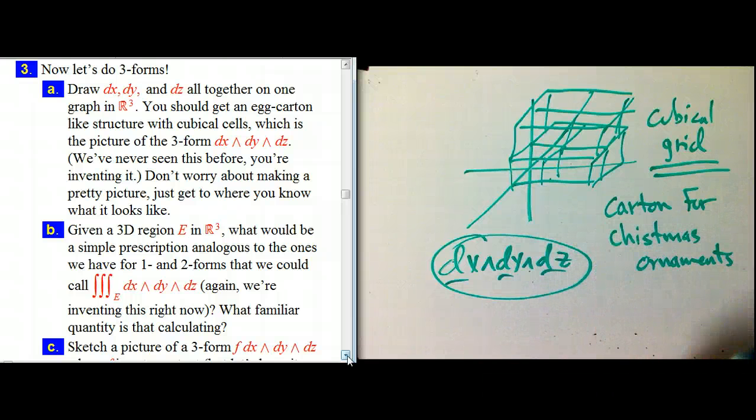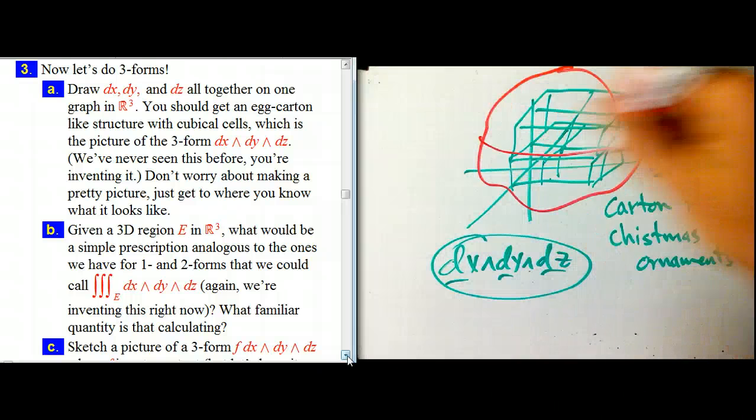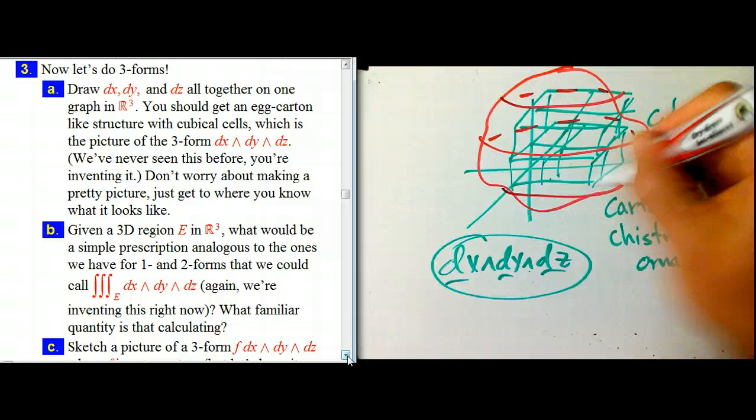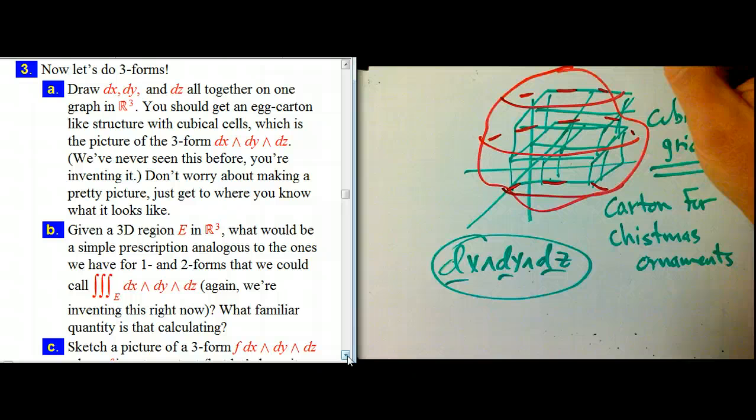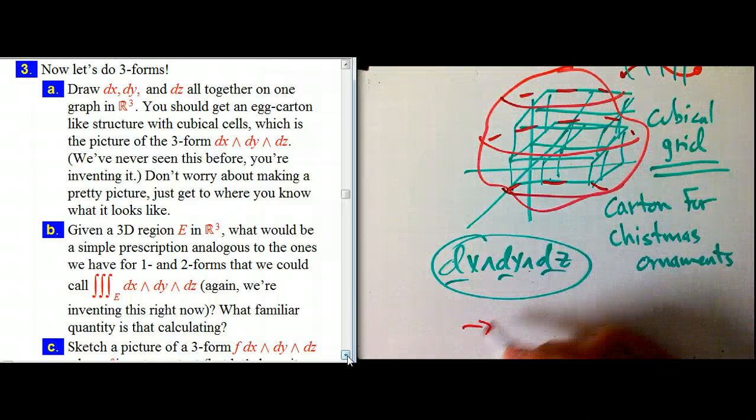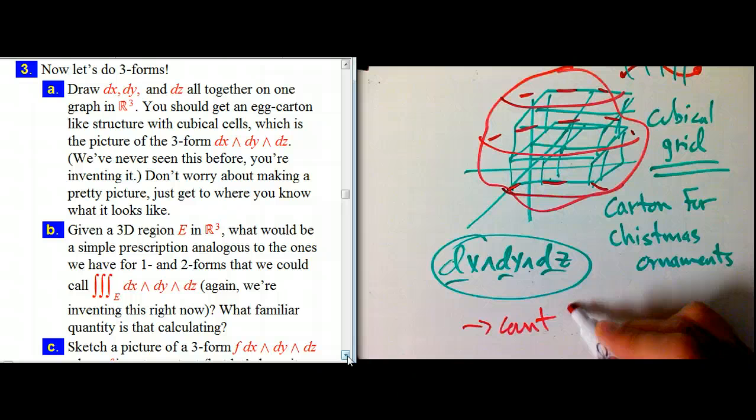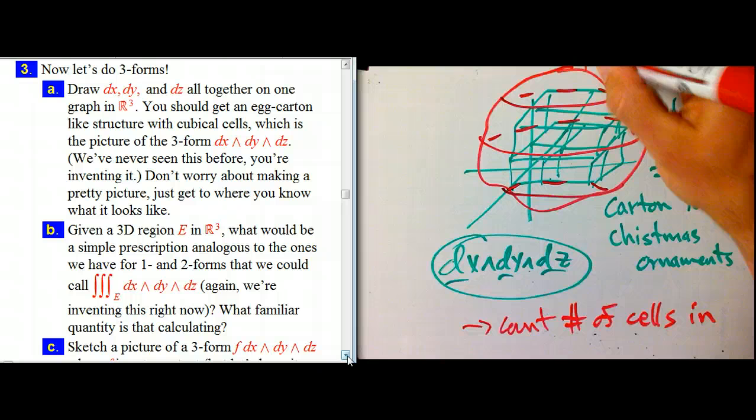And so we're going to call this, just like we did with dx wedge dy, we're going to say, if we draw all three pictures for dx, dy, dz individually, on top of each other, and hope that it means something, that's what we're going to define pictorially as dx wedge dy wedge dz. And then we'll have a more operational definition of how to integrate it and stuff like that in a minute. So let's look at B. Take a look at B. If you have some sort of 3D blob, and I want to get some number that's analogous to what we were doing before.